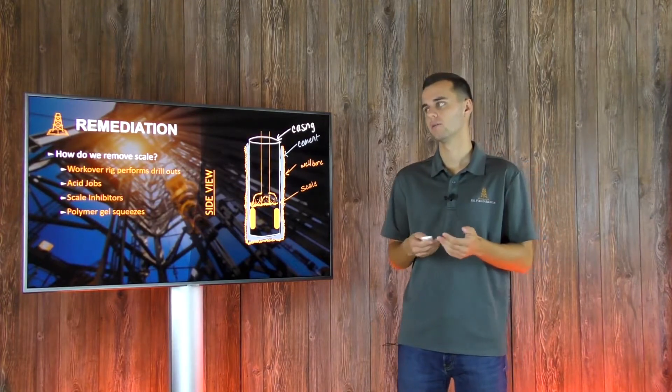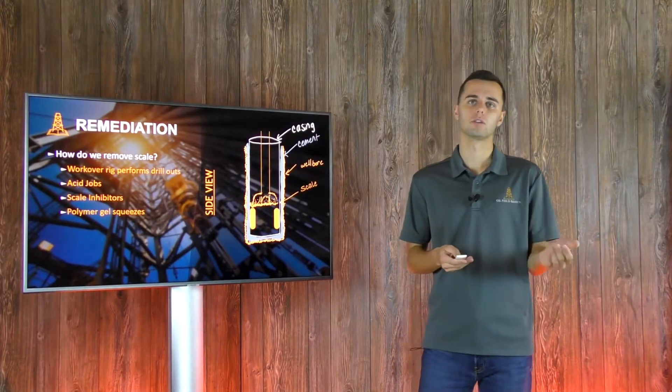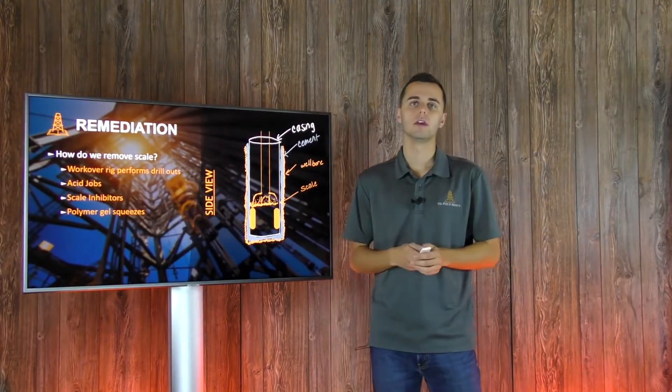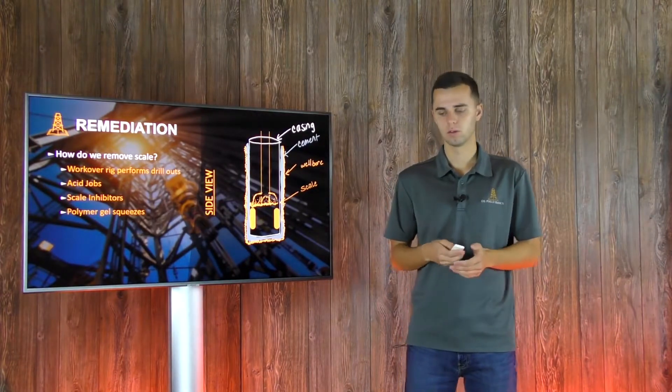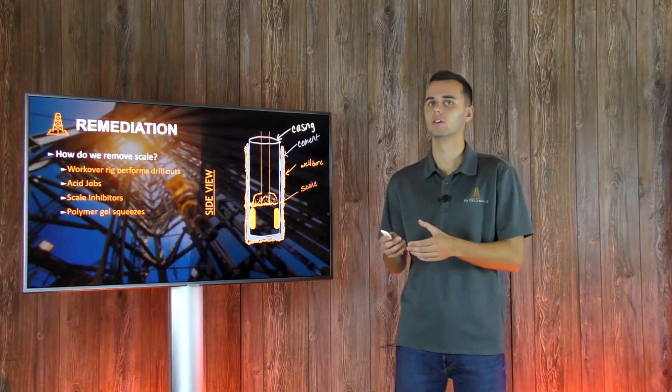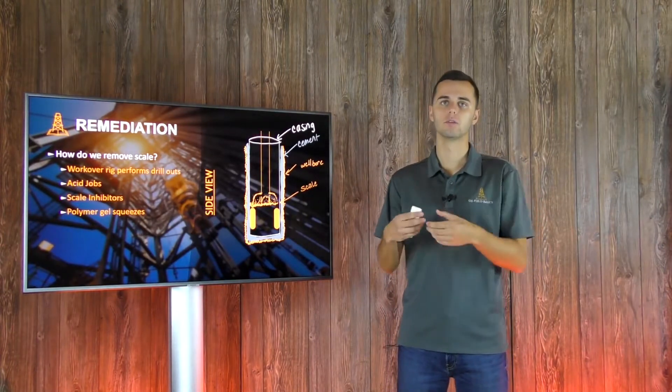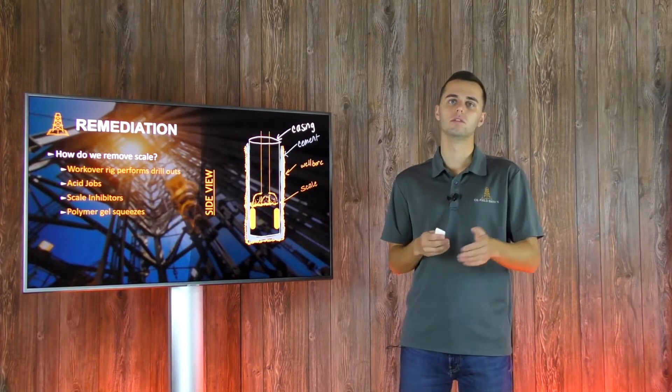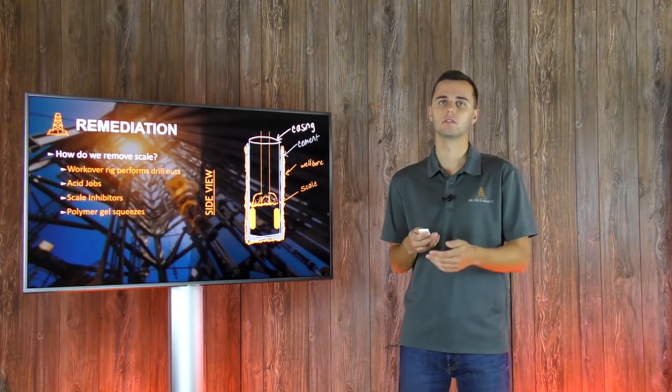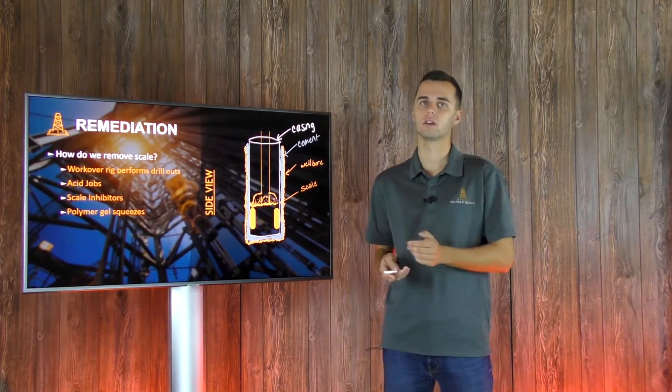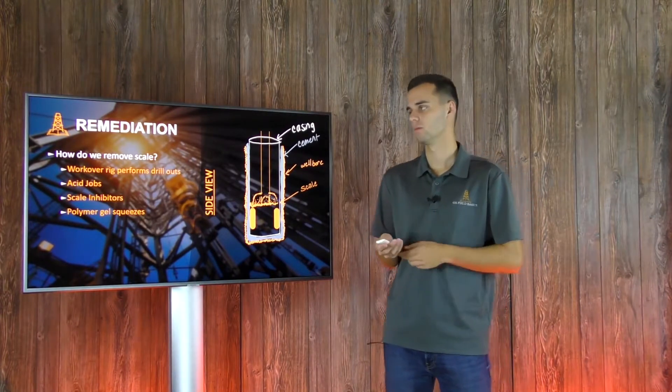It's a very reactive technique. I mean, all of these are, but you don't really know your scale until you start seeing it or you start seeing that production decline. Lastly, there's something called a polymer gel squeeze. If you've done several workovers and you've tagged scale in the same location several times, then it's very probable that those few perforations or that part of the reservoir is producing all of your scale-bearing water. Sometimes it would be economical to pump a gel squeeze, which will pump this gel slash cement slurry into those few perforations, just blocking them off, because you'd rather block off those few perforations and not produce from them anymore. In the long run, you're not going to have to spend hundreds of thousands of dollars to clean out and bring a workover rig and drill out that scale consistently. This is common in wells that develop scale very consistently every few months, because of the economics that come with it.